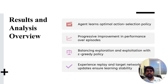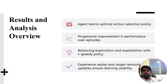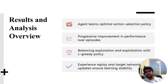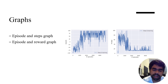Results show the agent learns an optimal action selection policy, with progressive improvement in performance over episodes. We saw improvement in analysis of performance over episodes, balancing exploration and exploitation with the epsilon-greedy policy. Experience replay and target networks ensure stability, so that one or two mistakes by the agent do not result in complete failure.